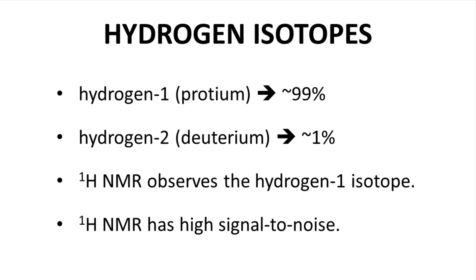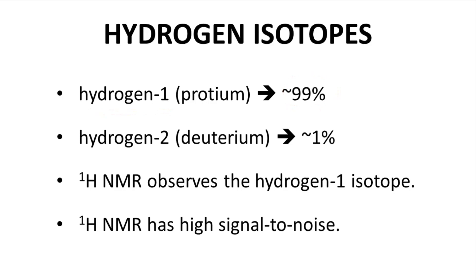Again, we'll start by talking about proton NMR. Proton NMR relies on the hydrogen-1 isotope, which is 99% abundant. So 99% of all hydrogen atoms are the hydrogen-1 isotope, also called protium. About 1% are the hydrogen-2, or deuterium, isotope. In proton NMR, since you are looking at a very abundant isotope, the signal from the sample tends to be strong, and the signal-to-noise levels are high.